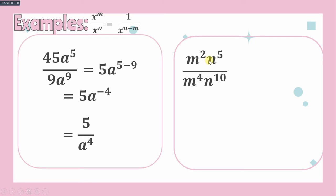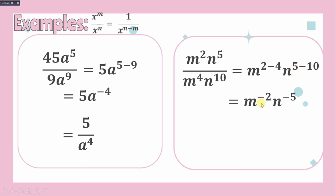Next example: we have m squared times n raised to 5 over m raised to 4 times n raised to 10. Applying the quotient rule, we subtract 2 from 4 and 5 from 10, giving us both exponents with a negative sign: negative 2 and negative 5. To make them positive, we take the reciprocal of each base and move them to the denominator. We have 1 in the numerator and m squared times n to the 5th power in the denominator.